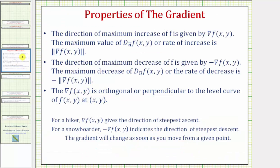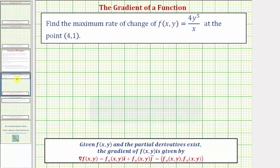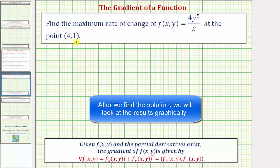For a quick review: the direction of maximum increase of f is given by the gradient of f at the point (x,y), while the maximum value of the directional derivative — or the maximum rate of increase — is equal to the magnitude of the gradient of f at (x,y). So we'll have two steps: first find the gradient at (4,1), then find the magnitude of that two-dimensional vector.